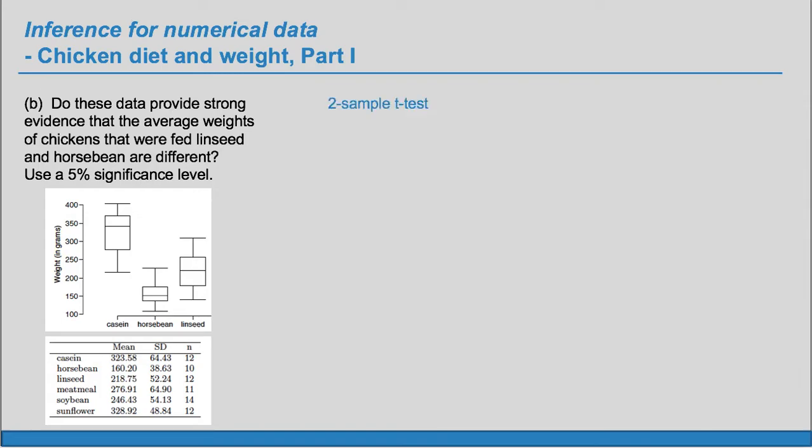And we are looking at averages, so this is going to be a two sample t-test. We can set up our hypotheses. The null hypothesis always says that everything is the same, there is no difference. So the true mean for horse bean is the same as the true mean for linseed. So mu sub H is equal to mu sub L or equivalently mu sub H minus mu sub L equals zero. That is to say there is no difference. Whereas H sub A says there is a difference in these averages.